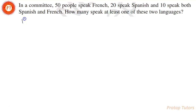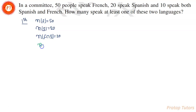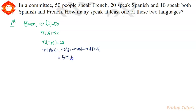Using the first method: the total number of people who speak French is 50, the total number who speak Spanish is 20, and n(French ∩ Spanish) = 10. Applying the addition theorem formula, n(French ∪ Spanish) = 50 + 20 - 10 = 60. So total 60 people speak at least one of these two languages, and this is our answer.